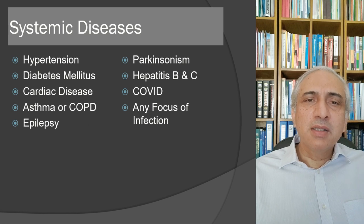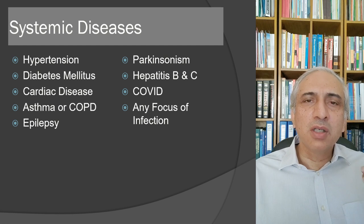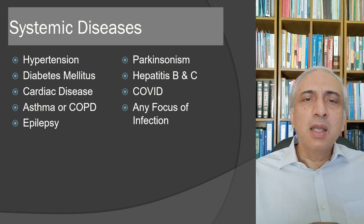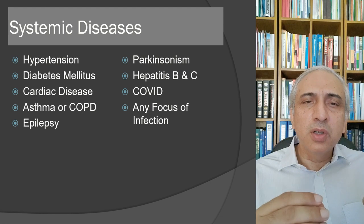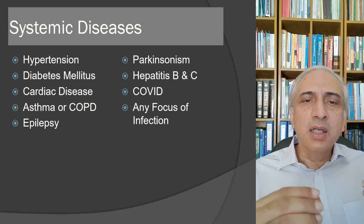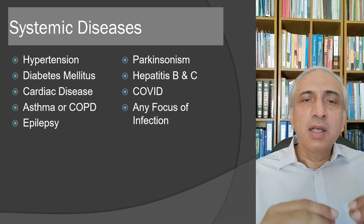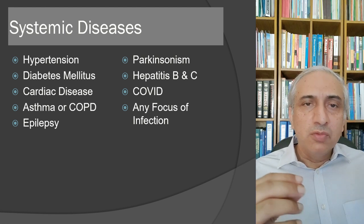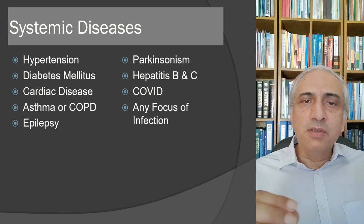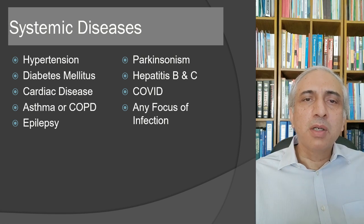Systemic diseases are important pre-operatively. Uncontrolled hypertension can cause expulsive hemorrhage. Uncontrolled diabetes causes poor wound healing and increased infection risk. Cardiac disease with active angina can result in intraoperative cardiac arrest — the speaker personally witnessed a patient die from cardiac arrest due to inadequate pre-operative cardiac assessment.